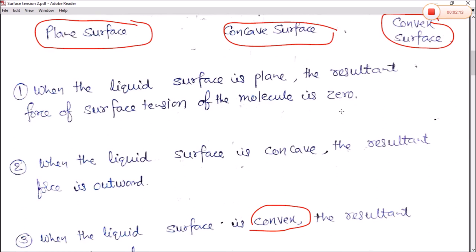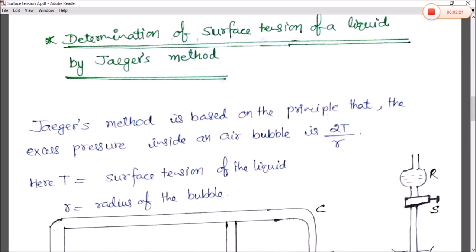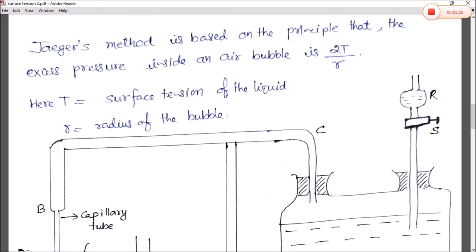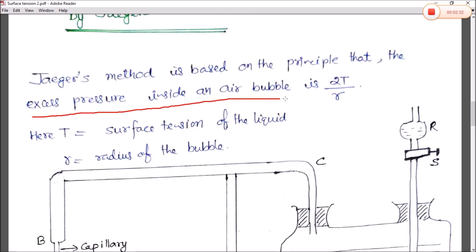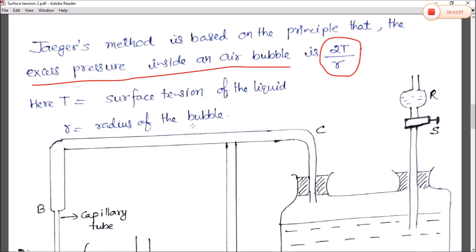Jager's method is based on the principle that the excess pressure inside an air bubble is 2T/R. As studied in Class 11 physics, the excess pressure inside an air bubble is 2T/R, while inside a soap bubble it is 4T/R, because the soap bubble has two surfaces — upper and lower — whereas the air bubble has only one surface.